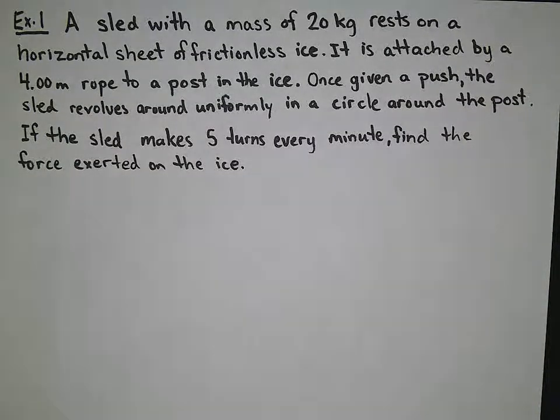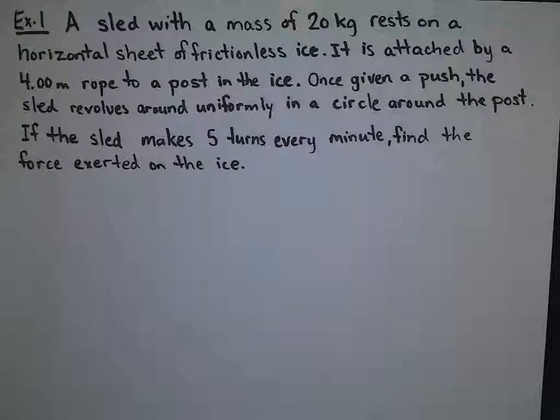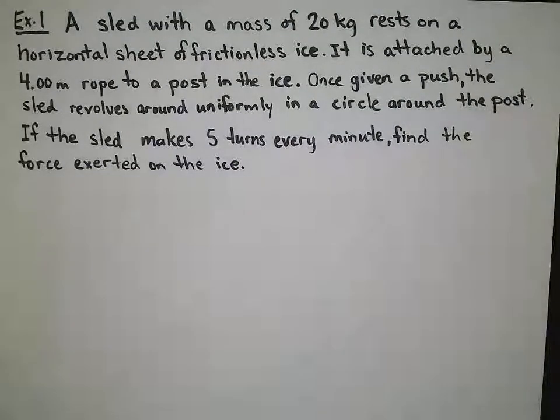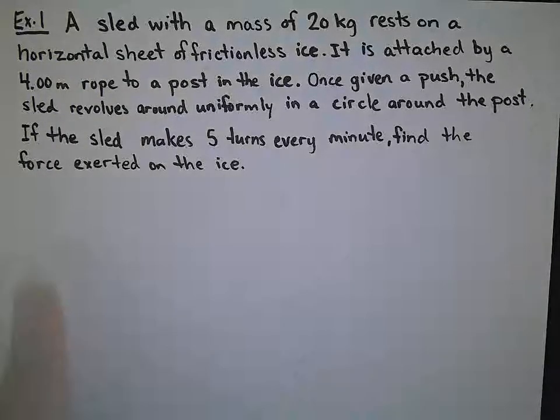And it is a sled with a mass of 20 kg that rests on a horizontal sheet of frictionless ice. We give it a push, and it is attached to a 4 m rope to a post set in the ice. When we give it a push, it revolves uniformly in a circle around the post. It makes 5 turns every minute, and we are looking to find the force exerted.